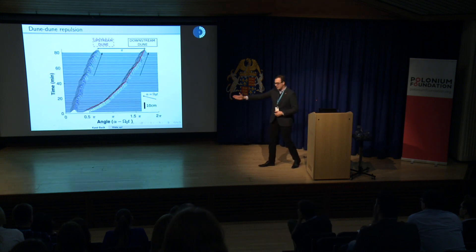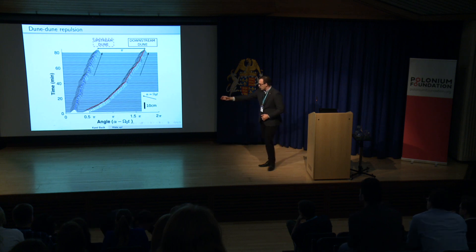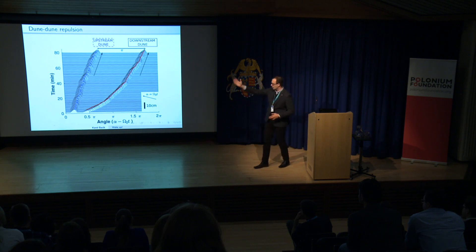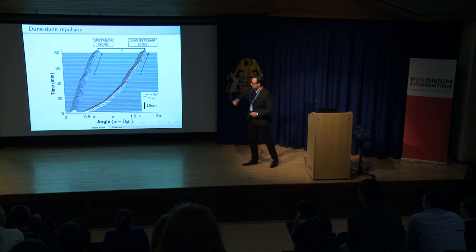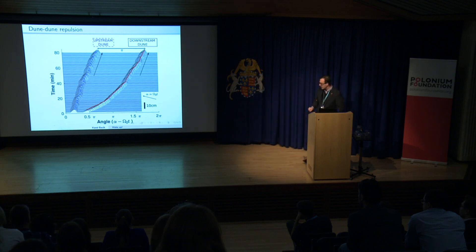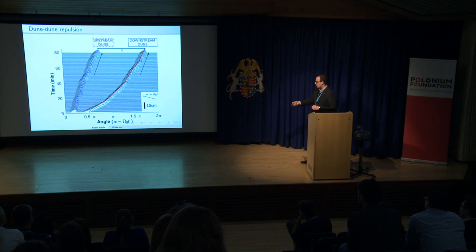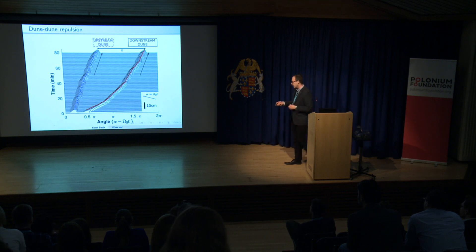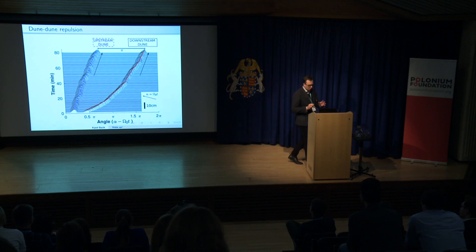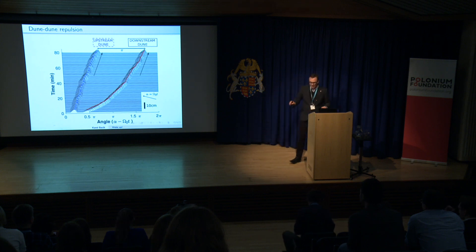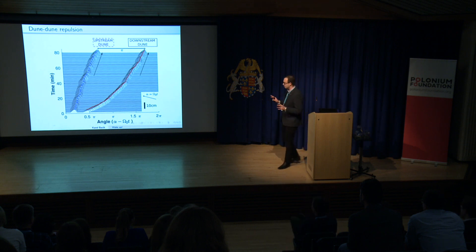It's nicely summarized in this space-time diagram. Here, space is characterized by an angle because our domain is periodic — it goes from zero to 360 degrees, also known as 2π — and time evolves from zero to 80 minutes. At time zero, we start with two dunes close to each other, and as the time progresses, both of them migrate downwind. But as they migrate, the separation distance between them keeps increasing, and about an hour into the experiment, they equilibrate in a fully antipodal position, 180 degrees — as far apart as they can get in our tank.